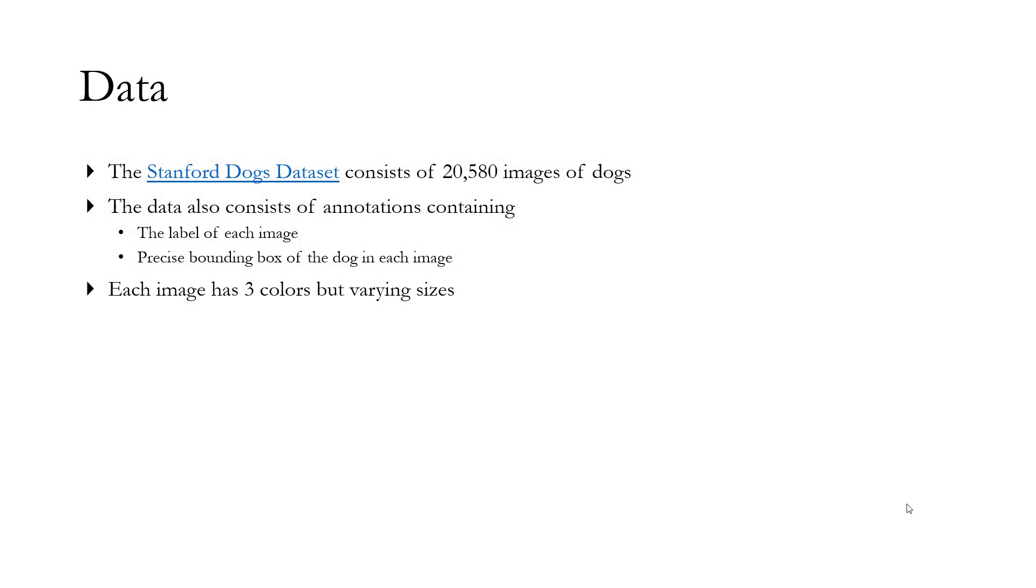The Stanford dog dataset consists of 20,580 images of 120 dog breeds to be precise. The data also consists of annotations - there are two types. There is the label of each image, and the second is there is a precise bounding box of each dog, which essentially means where exactly is the dog in the image.